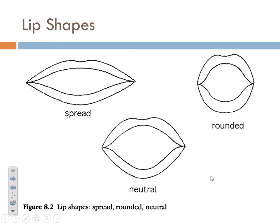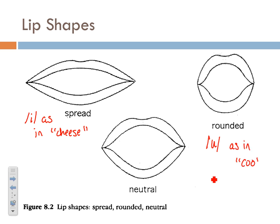'Spread' is the one we talked about before — vowels like 'ee' as in the word 'cheese.' That's the one that gives a smiling shape to our lips because they naturally spread when we say 'ee.' The other major one we need to distinguish for certain special vowels is lip rounding. You can say vowels like 'ooh' as in 'coo' or 'shoe,' and you can feel how your lips pucker up when you make those sounds.